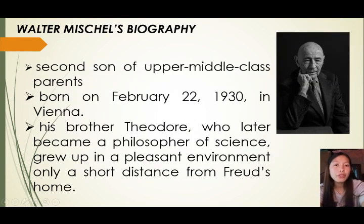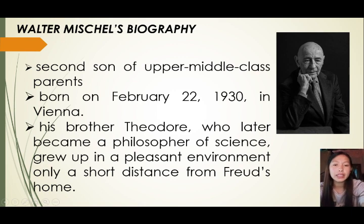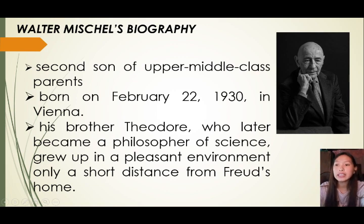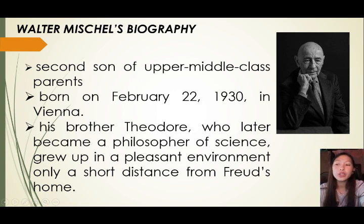Now for a quick background on Walter Mischel. He is the second son of upper middle class parents, born on February 22, 1930, in Vienna. He has a brother named Theodore who later became a philosopher of science, and grew up in a pleasant environment only a short distance from Freud's home. The Mischel family fled Austria and moved to the US when the Nazis invaded Austria in 1938. When his father became ill, Mischel had to find work to support his studies and daily needs. He later enrolled at New York University where he pursued his passion for both art and psychology.